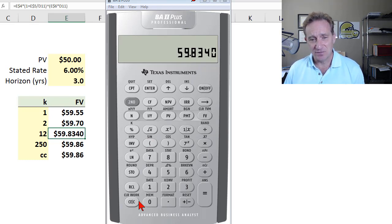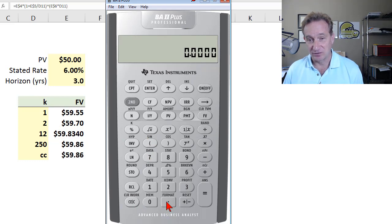Now let me do it for continuous. Continuous is pretty straightforward. I'm going to take my 6% multiply by three years. That's my exponent, right? And then I just need to access the function, second function key. Here's my E to the X. That's my multiplier. I've already got it. I can multiply it by $50 equals. And you can see I get 59.8609. That's a match.